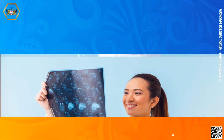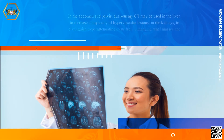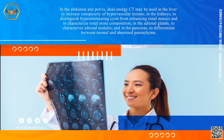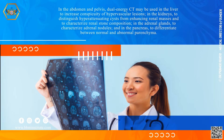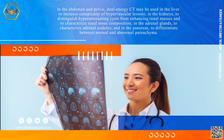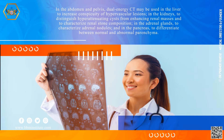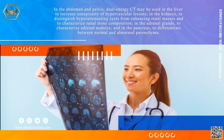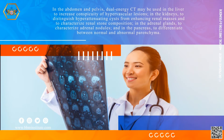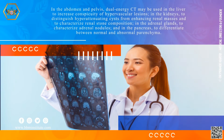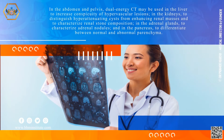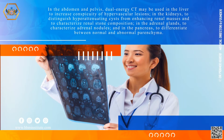In the abdomen and pelvis, Dual Energy CT may be used to increase conspicuity of hypervascular lesions in the kidneys, to distinguish hyper-attenuating cysts from enhancing renal masses, and to characterize renal stone composition. In the adrenal glands, it can be used to characterize adrenal nodules, and in the pancreas, to differentiate between normal and abnormal parenchyma.